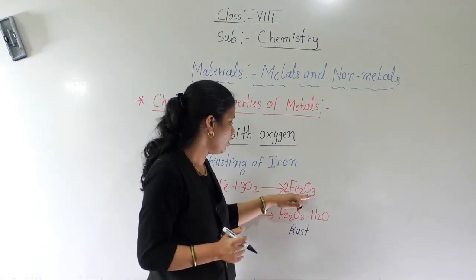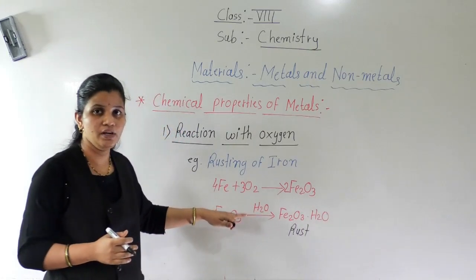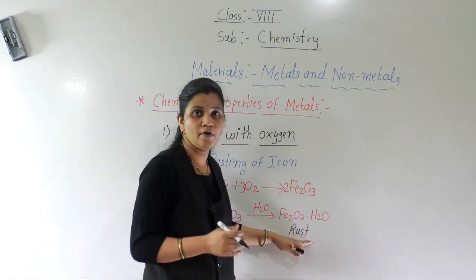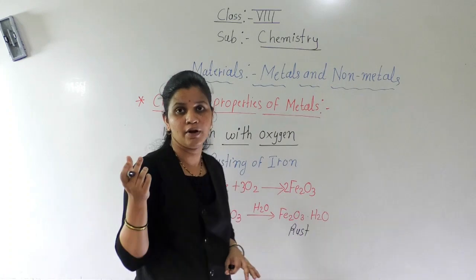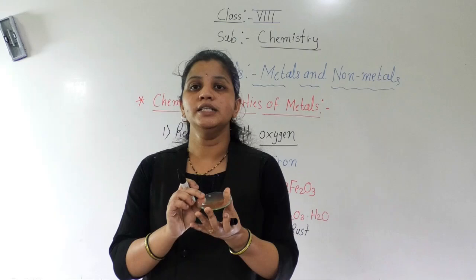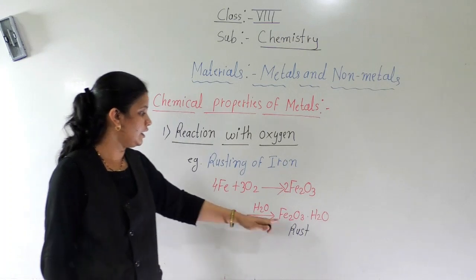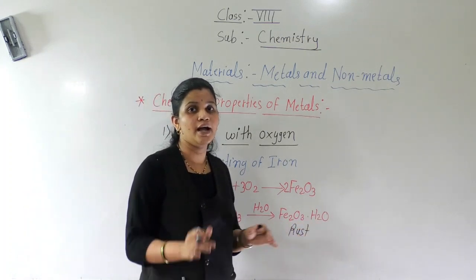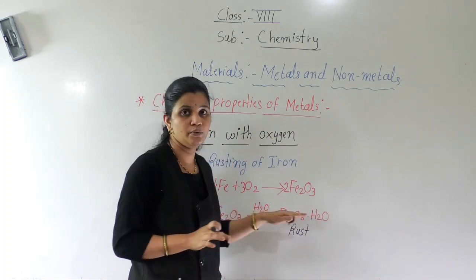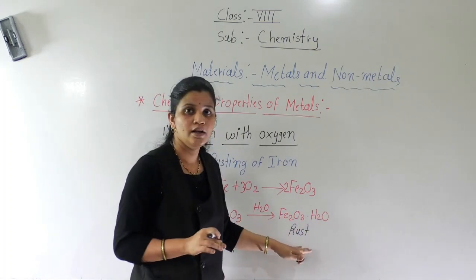But when this iron oxide is in the presence of water — H₂O means water — it forms rust. That is the brown color layer, the brown color powder. This is known as hydrated iron oxide. The hydrated word is used because this reaction occurs in the presence of water, and hydrated iron oxide is formed, which is known as rust.